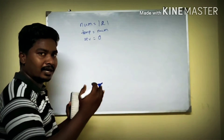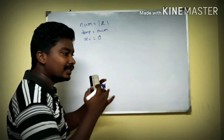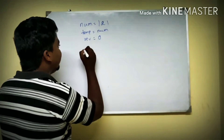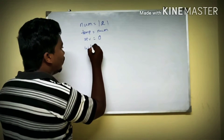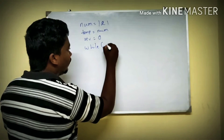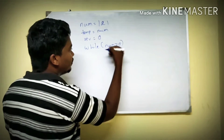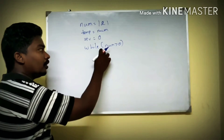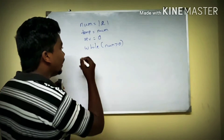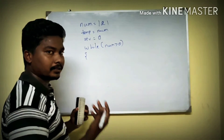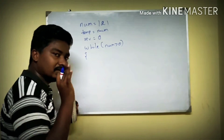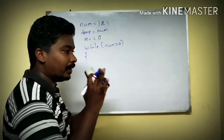Now we need to make the loop condition. The condition is: while num1 is greater than 0. So the loop runs as long as the num1 value is greater than 0.